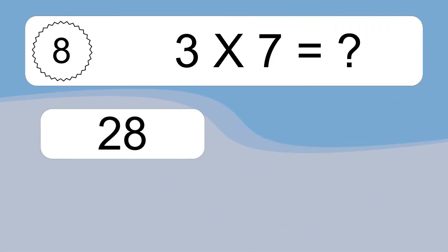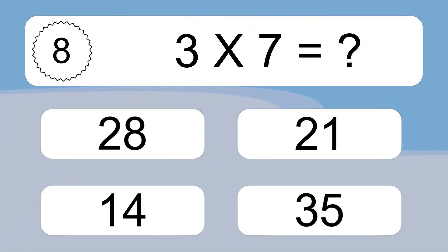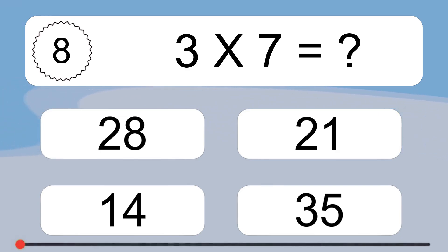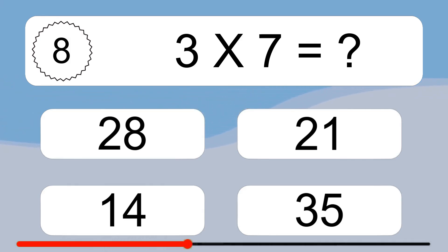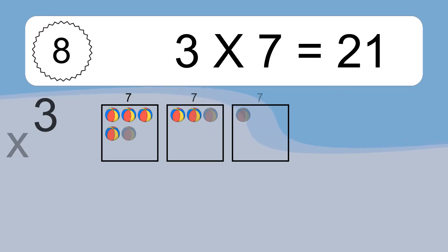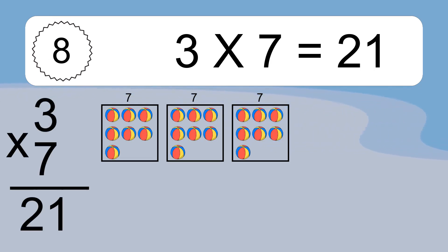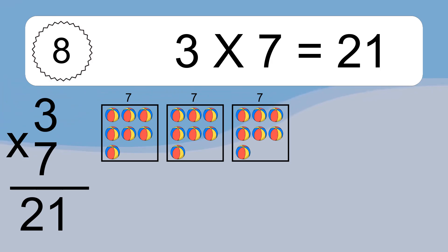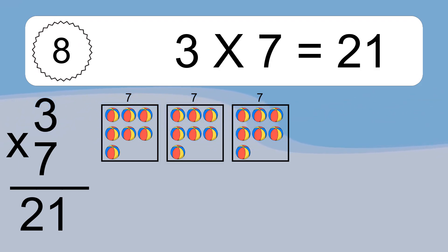3 times 7 equals what? 3 times 7 equals 21. We have 3 boxes and each box has 7 colorful balls inside. If you count all the balls in all the boxes together, you will have 3 times 7 balls. This equals 21 balls.